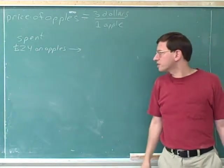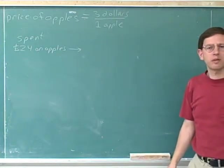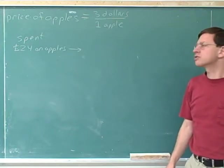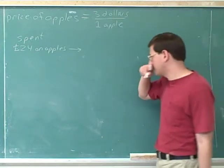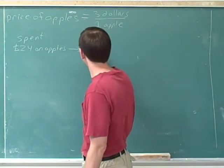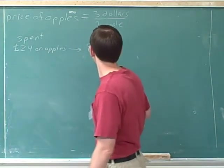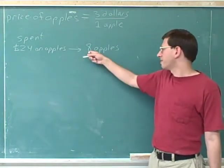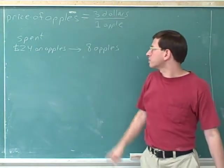If they're $3 per apple and you spent $24 on apples, how many apples did you buy? I hope that problem wasn't too hard for you. It should really just be common sense that you bought eight apples, because eight times three is 24. This is the number of apples you have to buy at this price to get you up to 24.